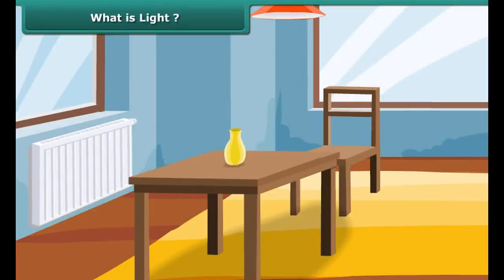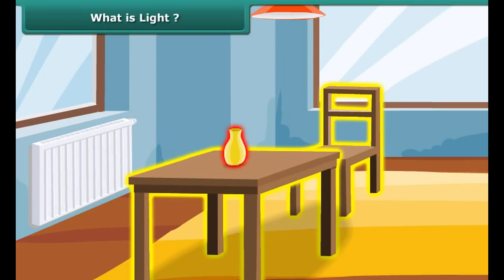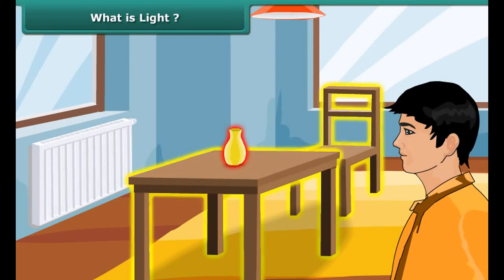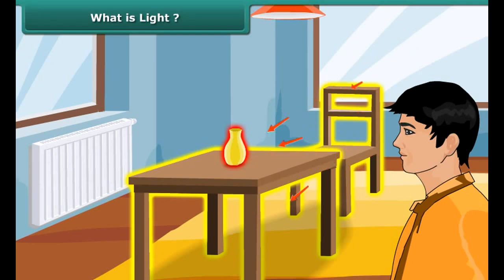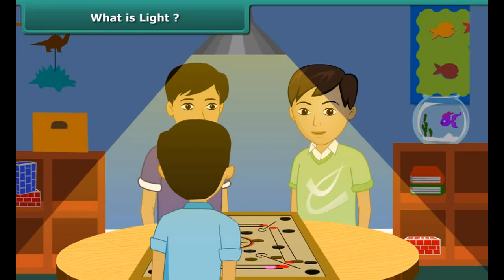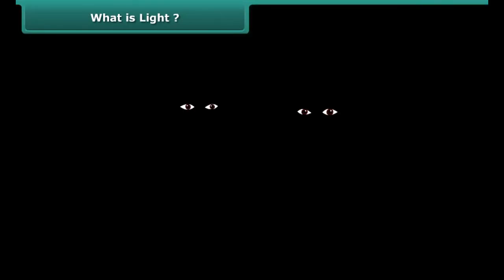You look at different things in this room — you can see the chair, table, and the beautiful vase on the table. Things are visible to us only when the light from the object enters our eyes. This occurs in two ways: either the object itself emits light, or it reflects the light falling on it from another light source. Hence, in complete darkness, due to the absence of light, we cannot see anything.